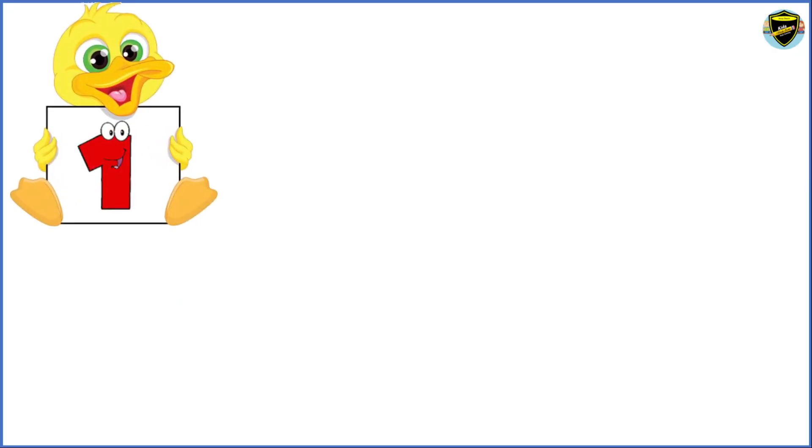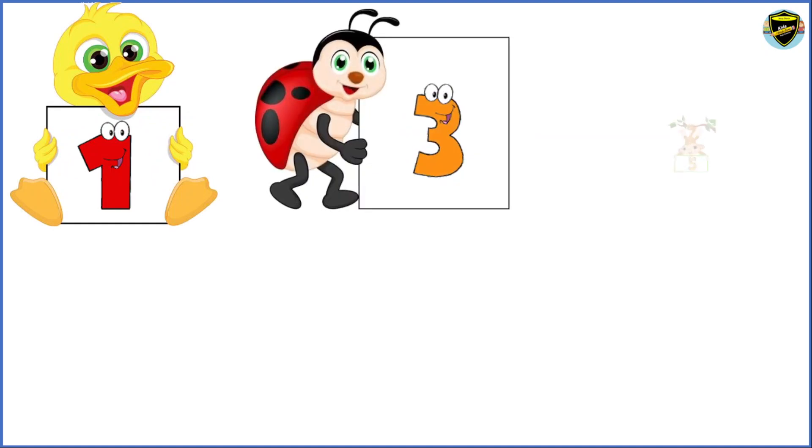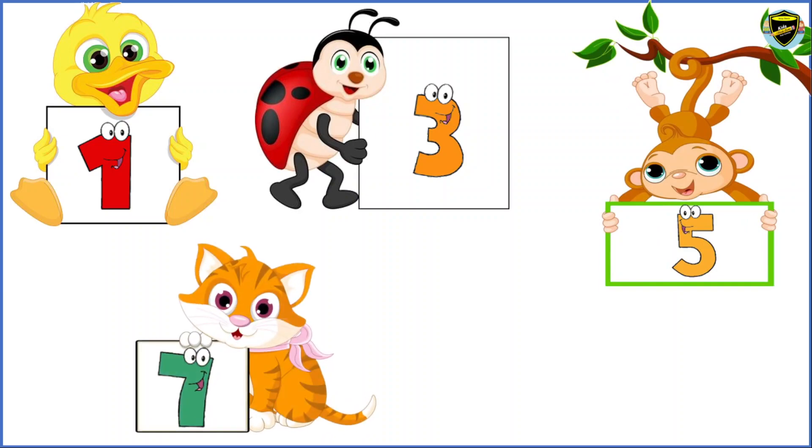All numbers with the digit 1, 3, 5, 7 and 9 at the ones place are called odd numbers.